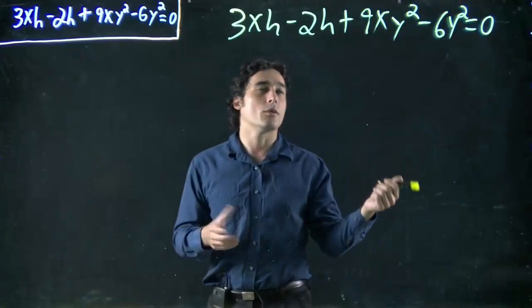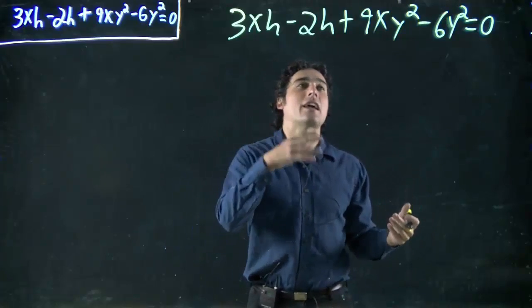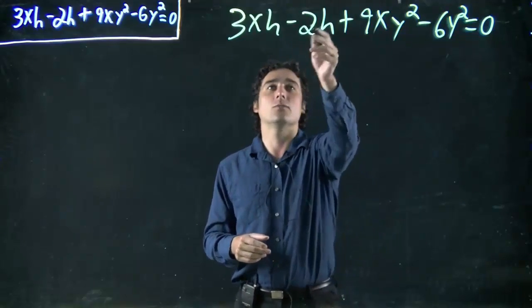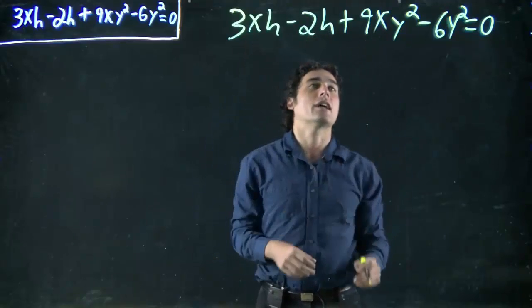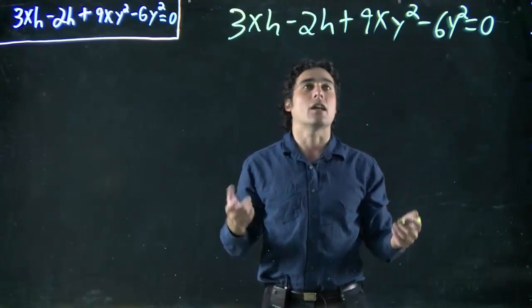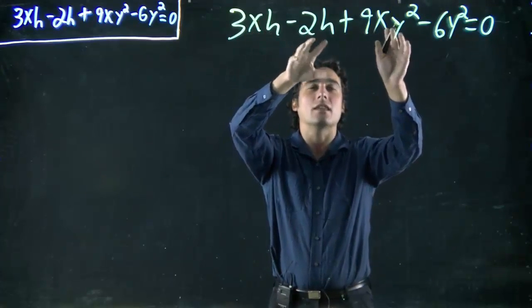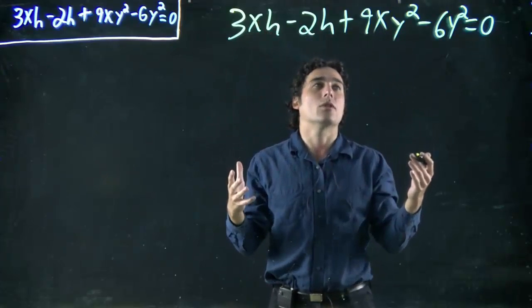We're doing common factoring, looking for things they have in common. I can see these two both have h's, these two both have x's, these two both have y squareds. So I've got to start thinking, what do I want to factor? I look at these two, if I factored out x from both of them, then I'm basically done. I can't do anything more.